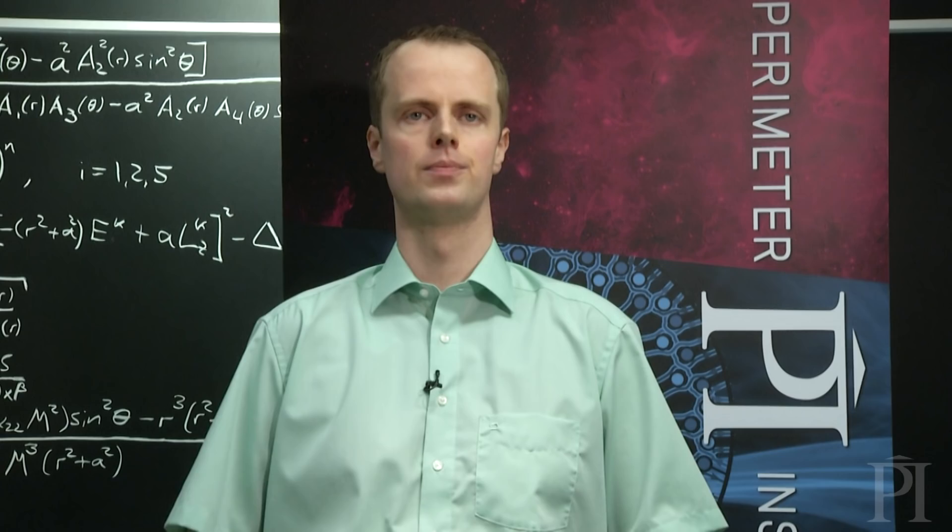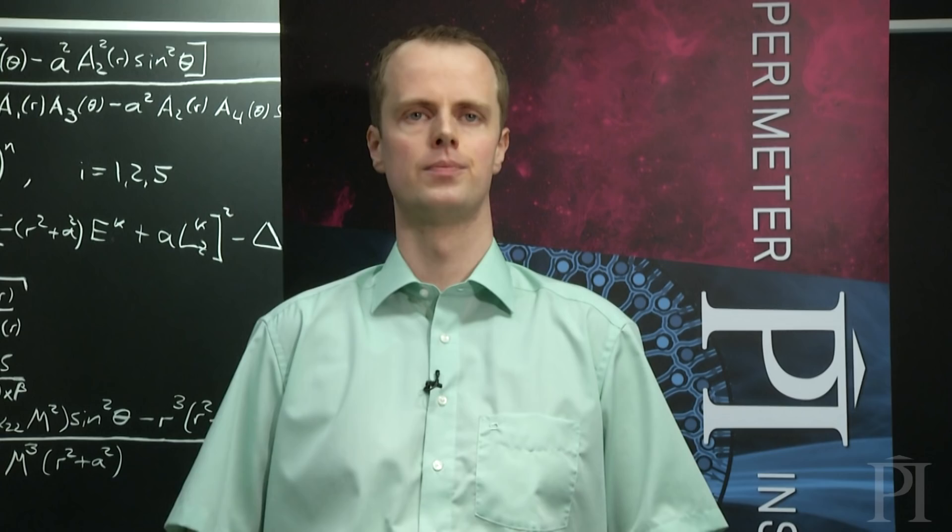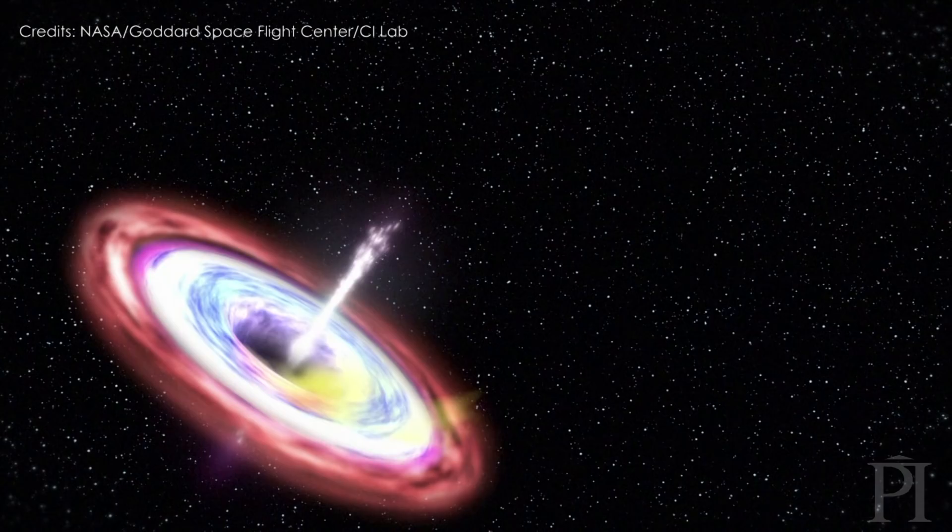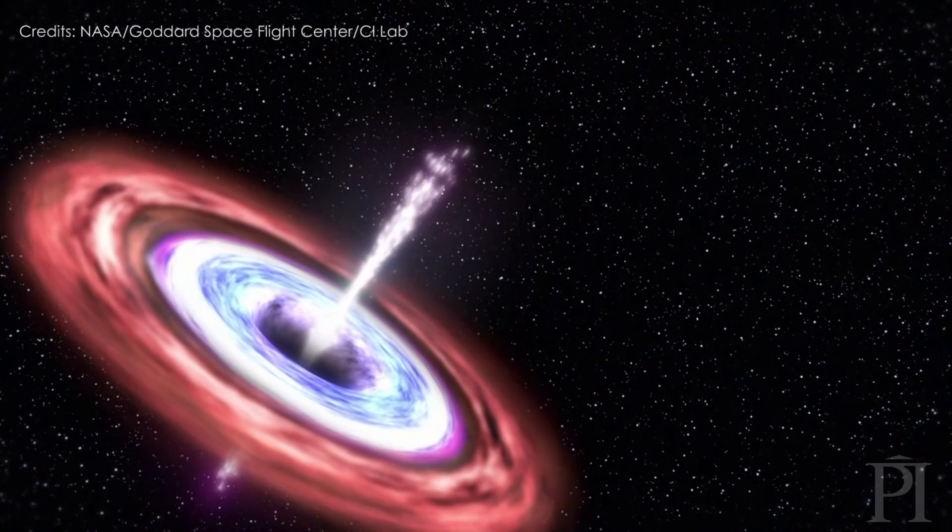Our prime target is the supermassive black hole at the center of the Milky Way. We call it Sagittarius A-star, or just Sag A-star. Sagittarius A-star is the 4 million solar mass behemoth at the center of our galaxy, and that makes it the closest supermassive black hole to Earth.